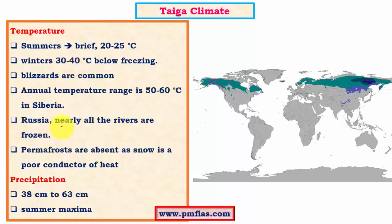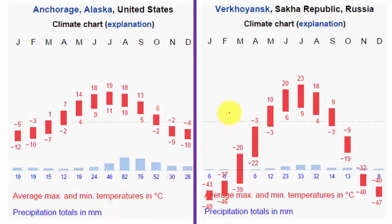In Russia, nearly all rivers are frozen, showing how extreme the climate is. Permafrosts — frozen soil — are absent in the Taiga type because the soil is covered by snow, which is a bad conductor of heat. Precipitation is quite low, only about 38 to 63 centimeters, mostly occurring in summer months, while winter precipitation falls as snow. In the Siberian region, summer temperatures can reach 23 degrees Celsius while winter temperatures can fall to minus 50 degrees Celsius — giving an annual temperature range of about 50 to 60 degrees Celsius.